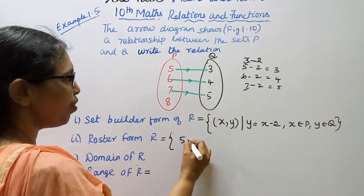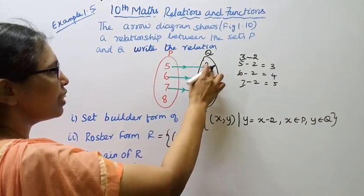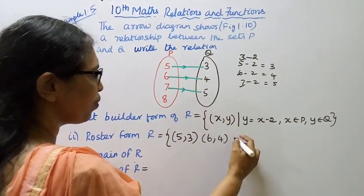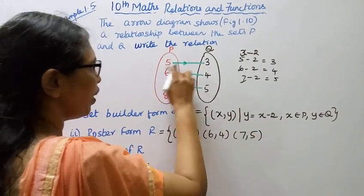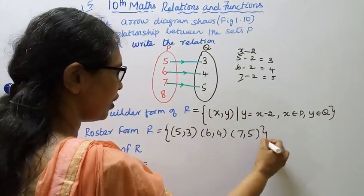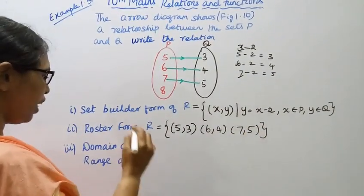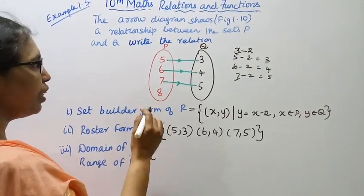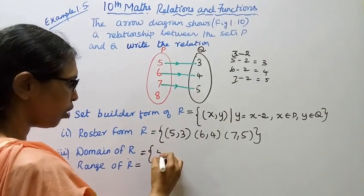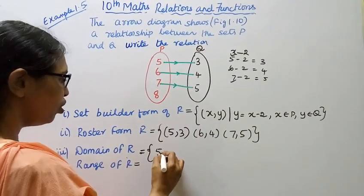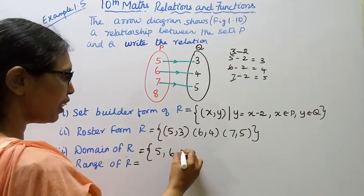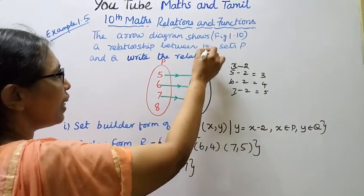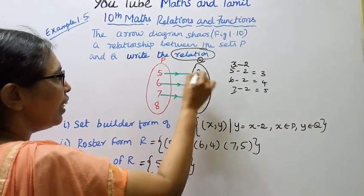Roaster form: 5 is related to 3, giving (5, 3). 6 is related to 4, giving (6, 4). 7 is related to 5, giving (7, 5). So R = {(5,3), (6,4), (7,5)}.